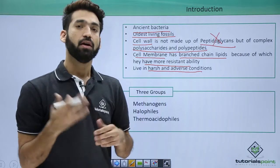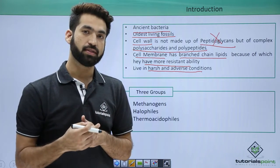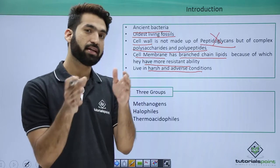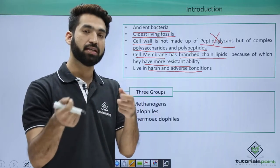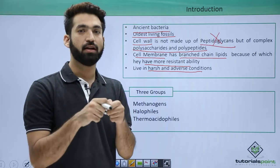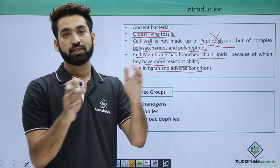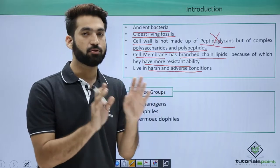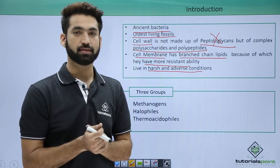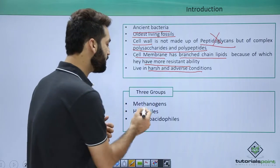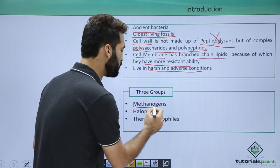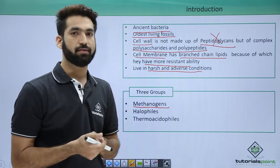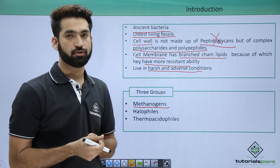This is a very important point. Most organisms die in harsh and adverse conditions, but Archaebacteria survive because the branching of lipids in their cell membrane does not disrupt membrane integrity. One such harsh condition is the presence of methane, where most organisms die. Archaebacteria that survive in methane-rich environments are called methanogens.